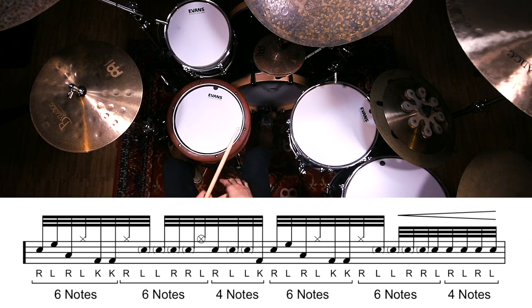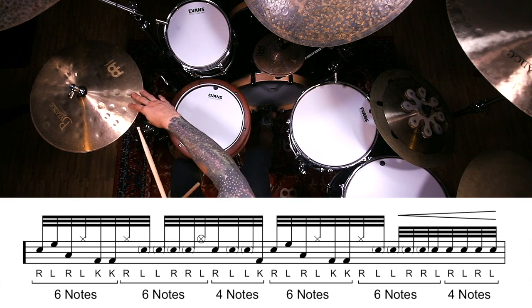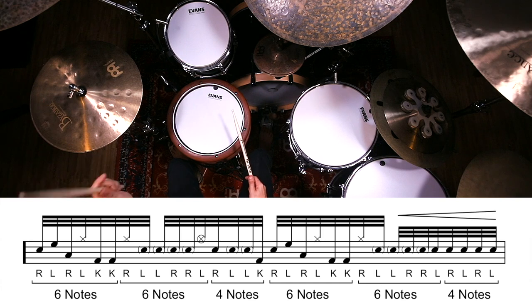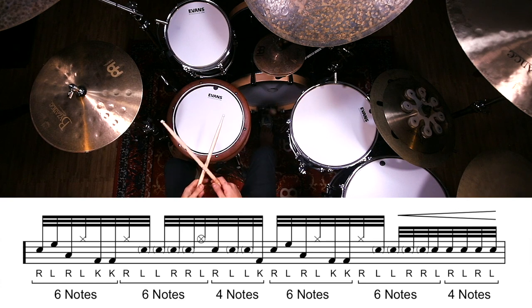I'm leaving that right hand on the snare. We're coming off of that closed high hat. So it will be a barked high hat. Excuse me, not a closed high hat. It'll be an open high hat there. Then that right hand comes down on the and of two, left, left, kick.